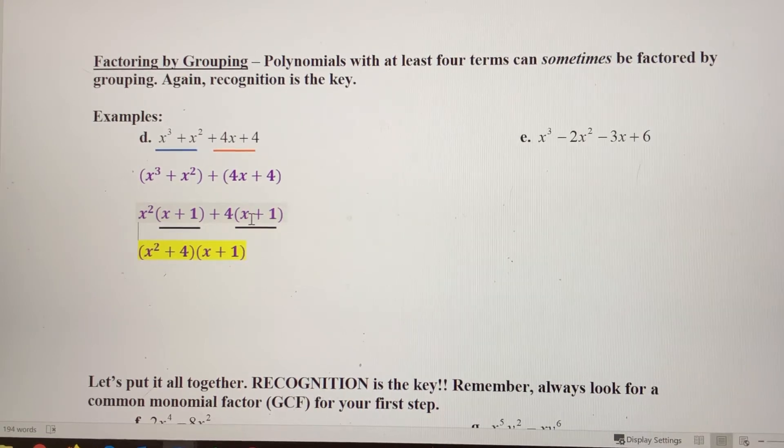You can also think of that as factoring out this x plus one as a greatest common factor from these two terms. So the x plus one comes out as a GCF and what's left over is x squared plus four. And there's a couple ways to think about this, but this will be the complete factorization of this four term polynomial that we started with.